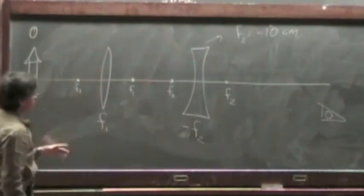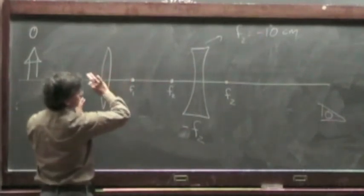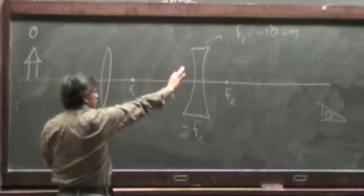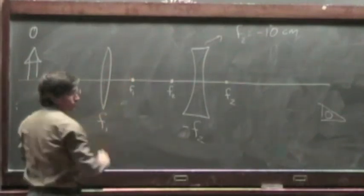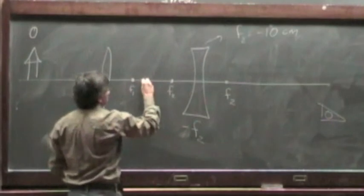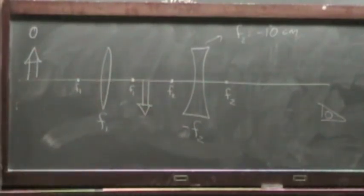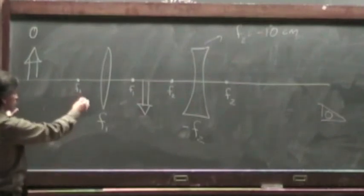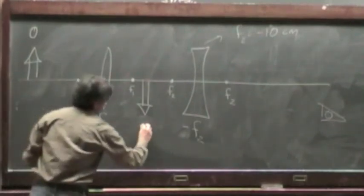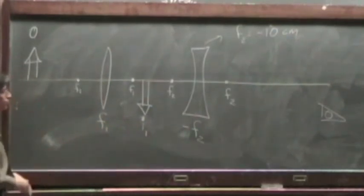So the general strategy is you forget that there is this other lens for a minute. You do the calculation with one lens. You figure out where the image of this object is going to be. This is a partial image. It's not the final answer to the problem. It's just step one in your problem. So this is the image due to optical element one.